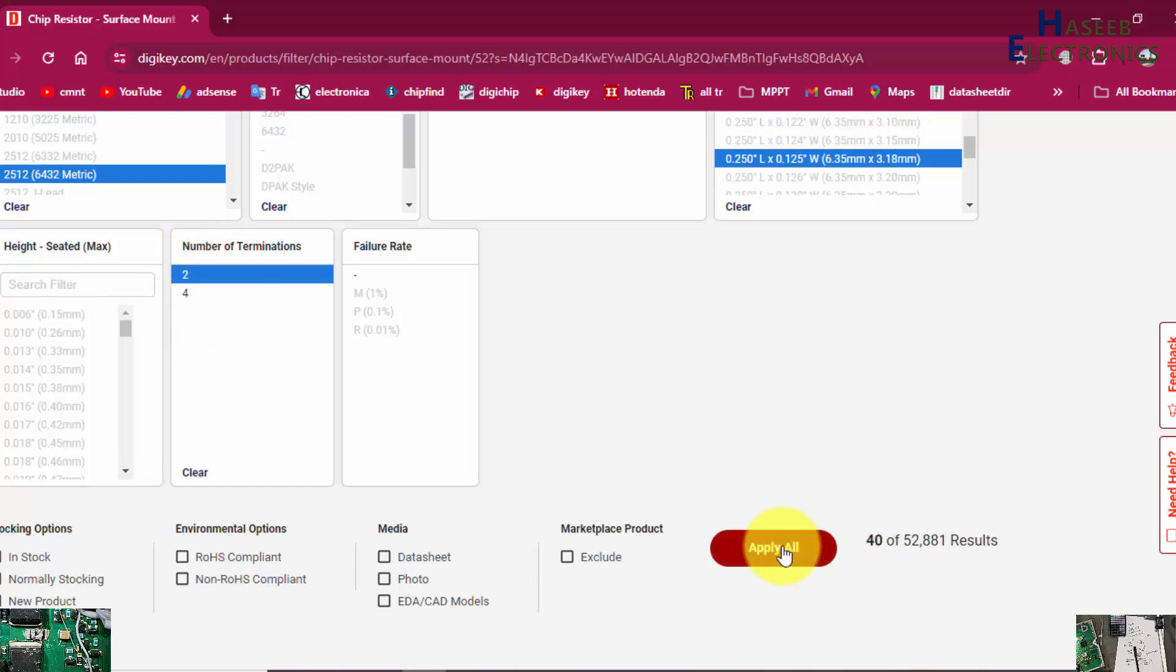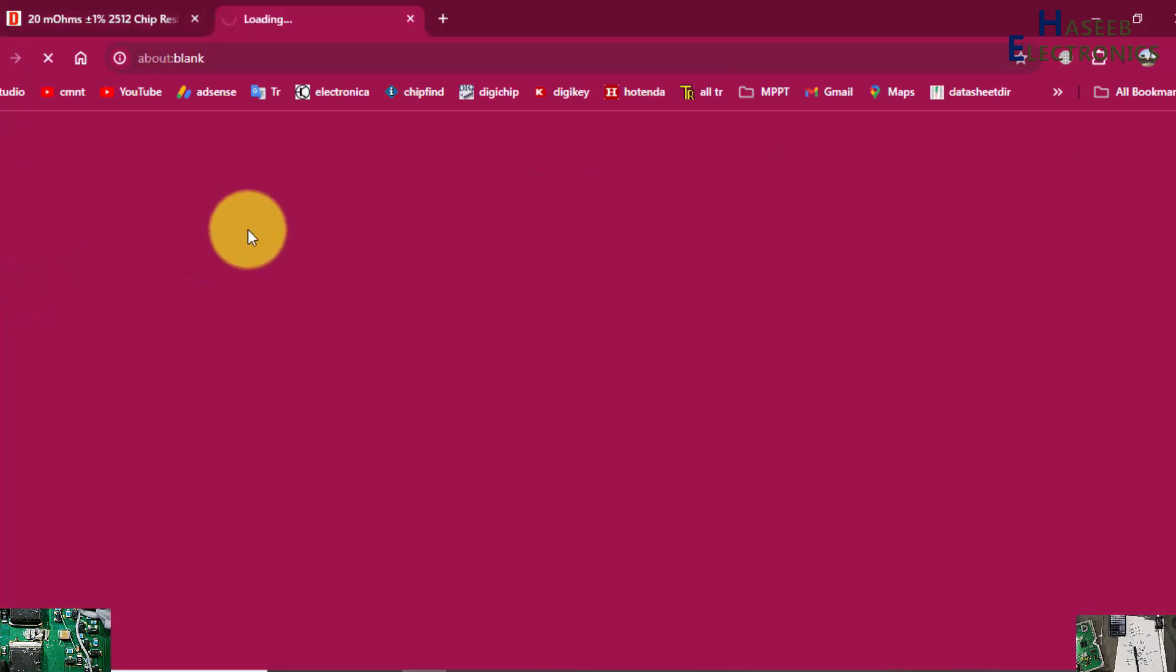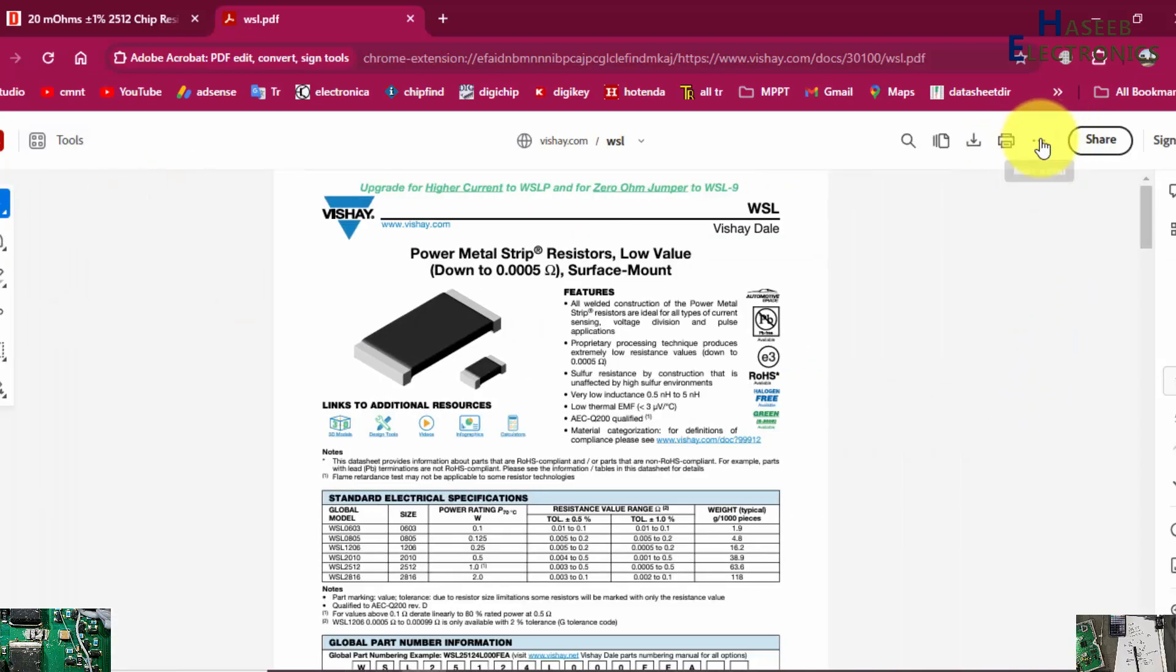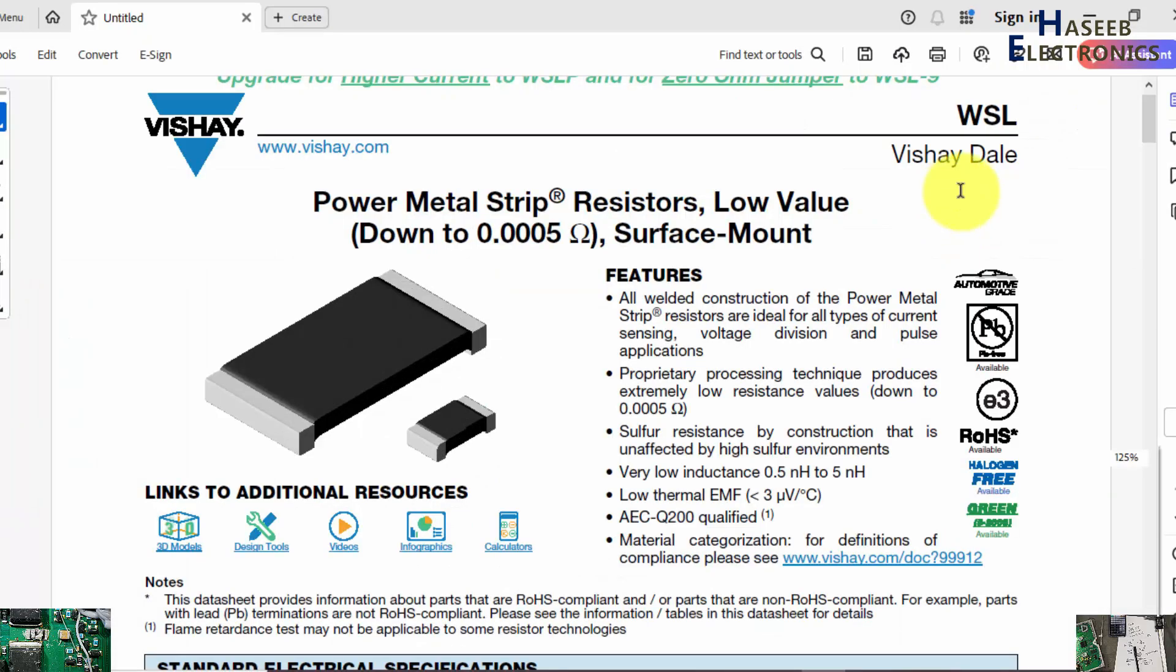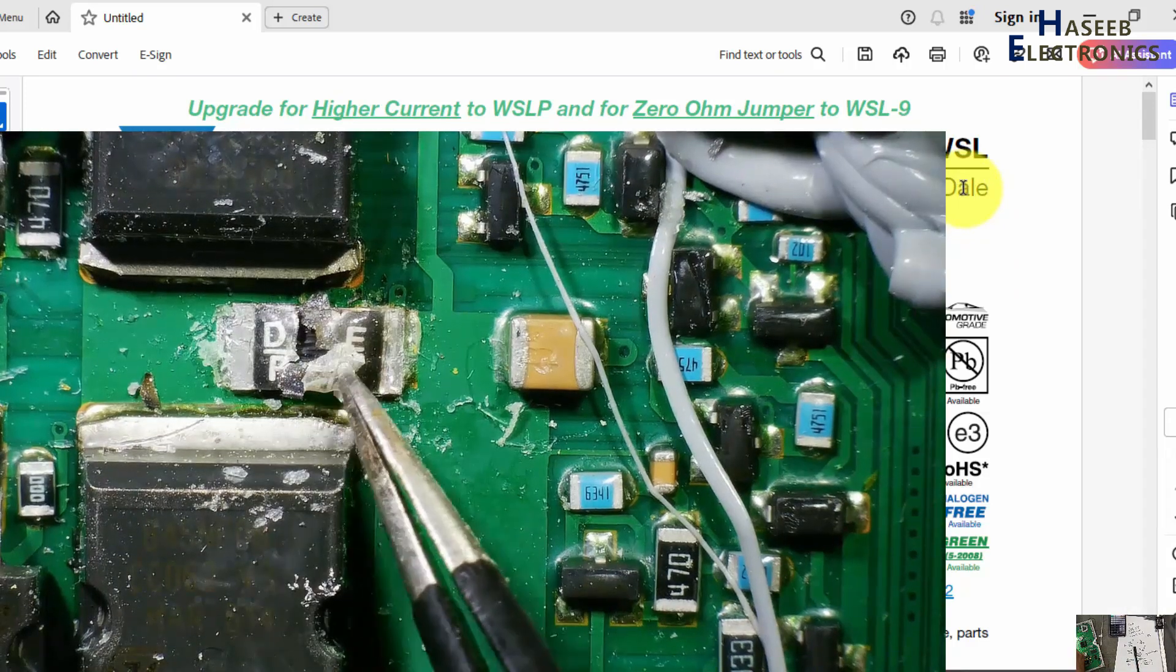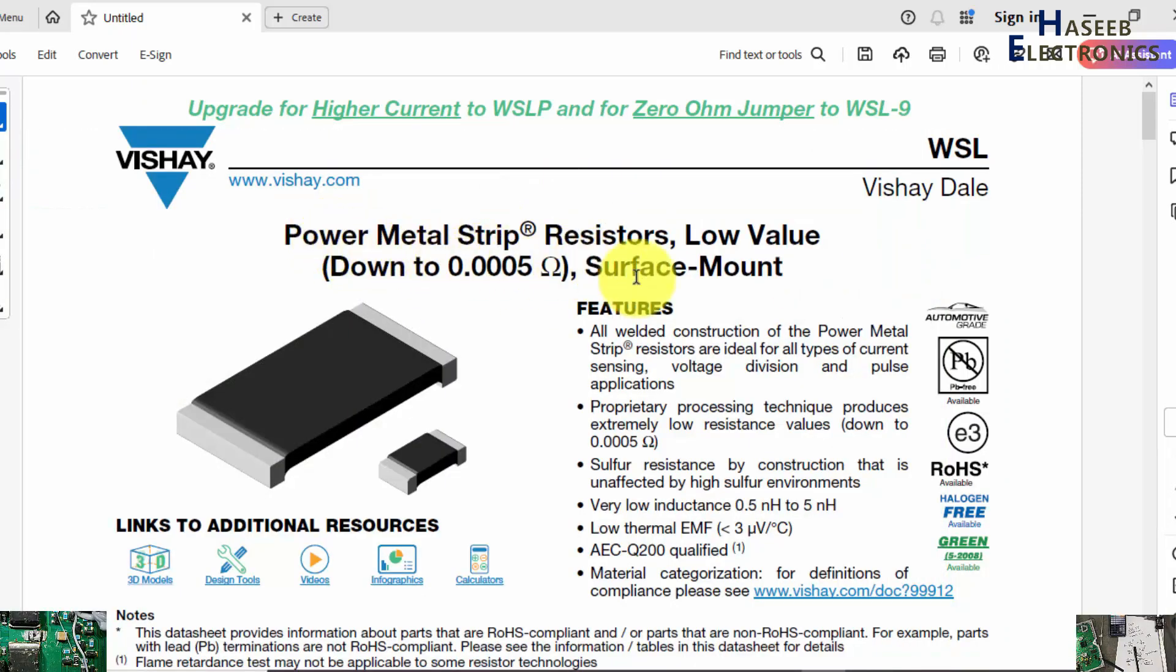Two terminal, four terminal? We need two terminal. Apply all. If we check the first one WSL2512 R0200 FEA, check its data sheet. Yes, Vishay Dale. So our required component has also marking Dale R02F. So it is power metal strip resistor, low value down to 0.0005 ohms.